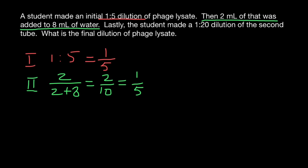And with the third step, lastly, the student made a 1 to 20 dilution of the second tube. So third step is 1 to 20 dilution, which we can represent as a fraction, 1 divided by 20.